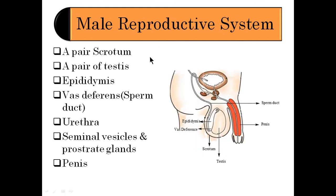Now let's discuss the male reproductive system separately. It consists of a pair of scrotum, a pair of testes, epididymis, which leads into vas deferens, then the ejaculatory duct, and then into the penis. Sperms are produced by the testes, stored in the epididymis, and through the vas deferens they go into the ejaculatory duct, where they meet the urethra from the urinary bladder. Secretions from Cowper's glands, prostate gland, and seminal vesicles are also added, and then sperms are ejaculated through the penis into the vagina of the female.